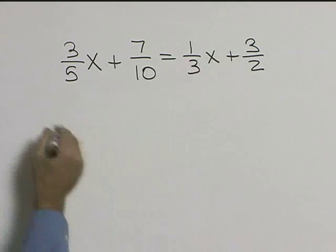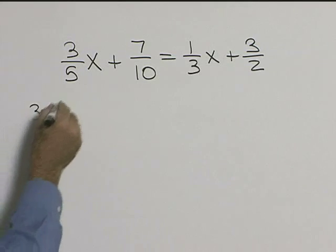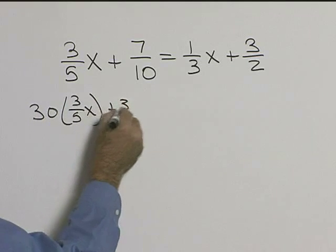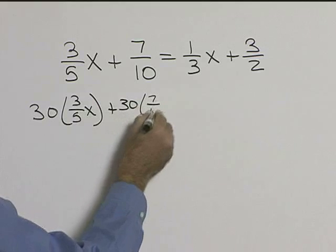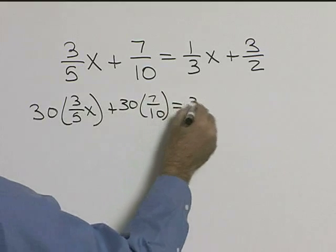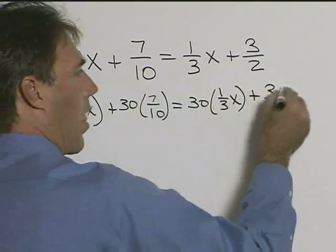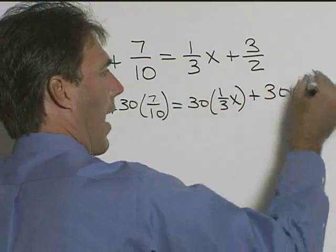So let's multiply each one of our terms by 30. So this will be 30 times 3/5 x plus 30 times 7/10 is equal to 30 times 1/3 x plus 30 times 3/2.